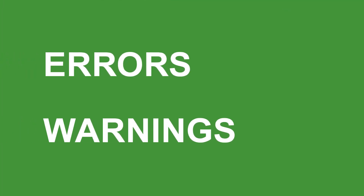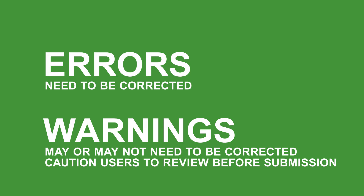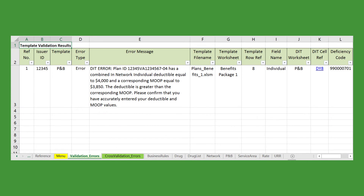Results are categorized as Errors or Warnings in the Error Type column. An Error represents something in the data that needs to be corrected before submitting application data. A Warning identifies something that could potentially result in an error in the application and cautions users to review before submitting data. If you receive an error or warning, you should review the information provided. Issuers will need to make the necessary corrections to their templates.